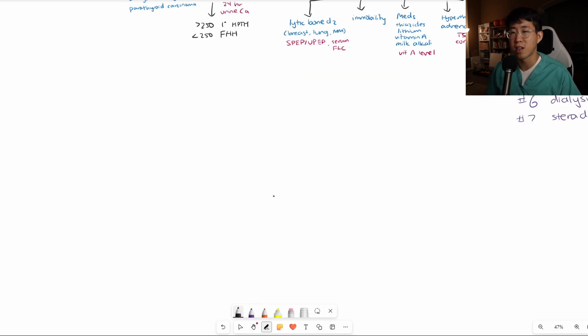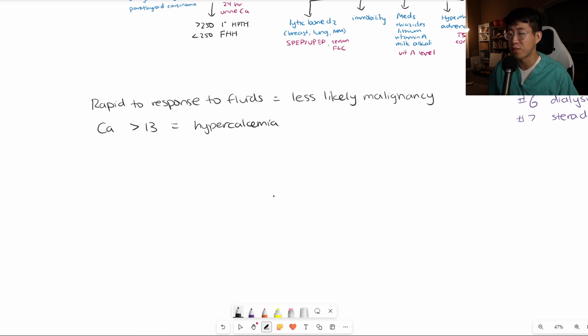Let's finish off with some bonus pearls. If a patient has rapid response to fluids, this should tell you it's less likely to be malignancy. Calcium level greater than 13, especially on your board exams, is highly correlated to hypercalcemia of malignancy. Because primary hyperparathyroidism rarely gets to this level.